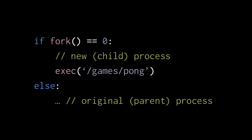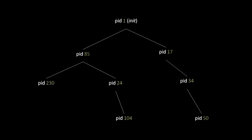If processes are only created by other processes, where did the first process come from? When a Unix system starts, there's always a first process called the init process, and from there all other processes descend, forming a hierarchy. Each process is known by a unique process ID number, or PID. Init always has PID 1, and subsequent processes get the next available PID number. These process ID numbers can be reused — once a process terminates, a subsequently created process might be given that same ID.